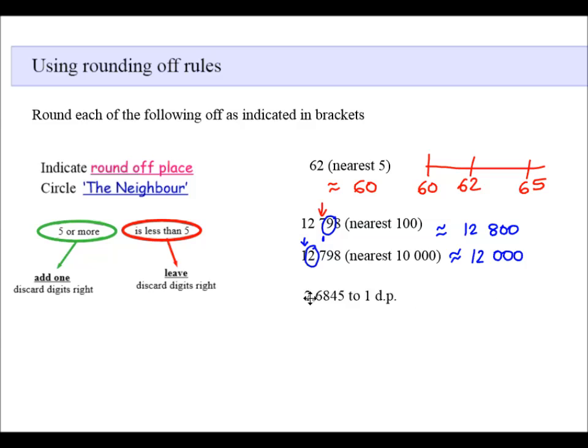Let's have a look at decimals. We have to round this number off to one decimal place. So we are going to identify—that is one decimal place, round off place. I then circle the neighbor, which is eight. Eight is greater than five, so I add one to the round off place. And that number rounded off to one decimal place would be 2.7. You see, we discard the rest of the digits to the right of the round off place.